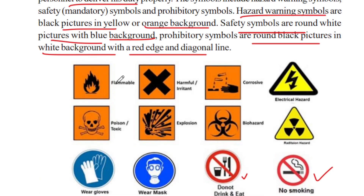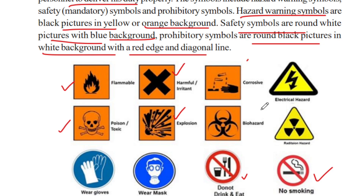Hazard symbols include: flammable, poison and toxic, harmful, explosion, corrosive material, biohazard, and wear mask symbols. These are all important hazard warning symbols used in the laboratory.